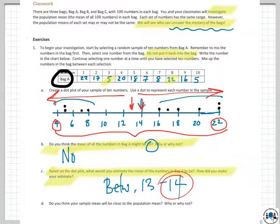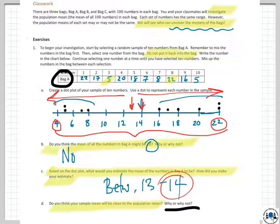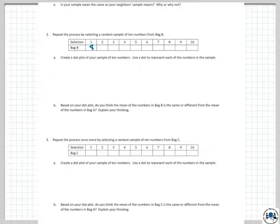Do you think the sample mean will be close to the population mean? The population is 100 pieces of paper and I picked out 10. It's kind of a hard question — maybe yes, maybe no. I'm going to say yes, sure. Is your sample mean the same as your neighbor's? You can't just put the numbers 1 to 100 because the 100 numbers aren't necessarily 1 to 100 — there can be several of one number. As you saw, there were two 22s and two 5s in the bag A sample.